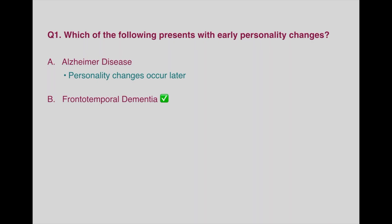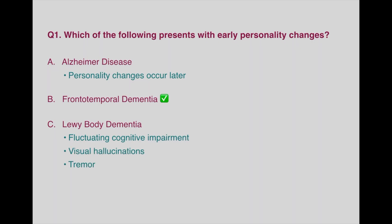Lewy body dementia is associated with fluctuating cognitive impairment, visual hallucinations, and tremors.